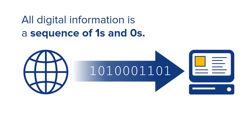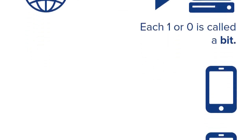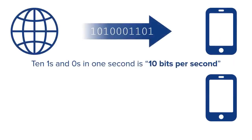These ones and zeros are called bits. For example, 10 ones and zeros is called 10 bits. So if you could send 10 of those bits in one second, you would say that's 10 bits per second. That's throughput — throughput is literally how many ones and zeros, or bits, someone can send in one second. So 10 bits per second means we can send 10 ones or zeros per second, and 1,000 bits per second means we can send 1,000 bits per second.